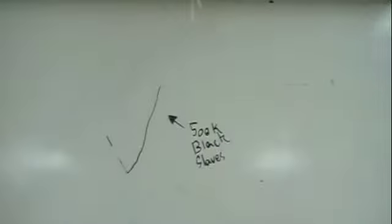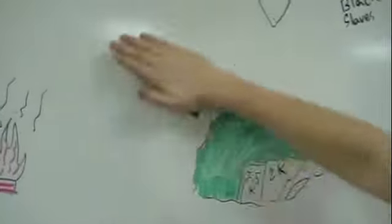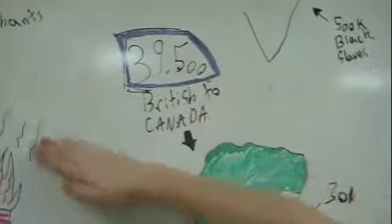The 13 colonies had 500,000 black slaves in them alone. During the American Revolution, 39,500 British loyalists left for Canada and England.